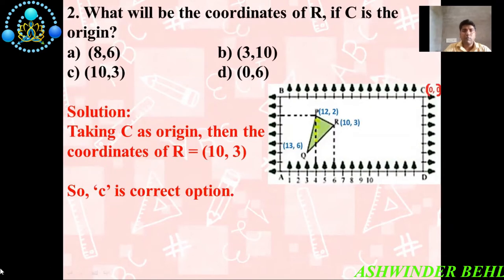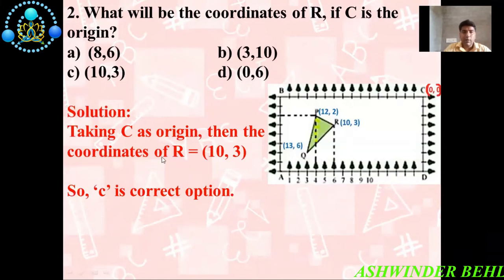Second question: what will be the coordinate of R if C is the origin? The four options are: A) (8, 6), B) (3, N), C) (10, 3), D) (0, 6). Now for the solution — taking C as the origin, the coordinate of R is (10, 3). With the help of this picture, you can easily identify that if C is the origin, then R has coordinates (10, 3). So C is the correct option.